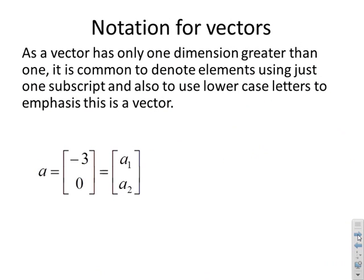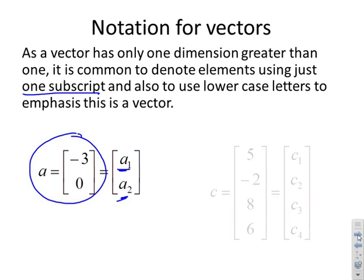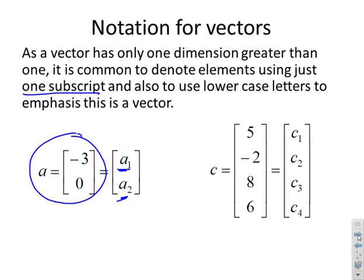Some notation for vectors: a vector has only one dimension greater than one, and therefore it's common to denote elements using just one subscript rather than two, because one of the subscripts is superfluous. For example, A is given by a column matrix with elements denoted just as A₁ and A₂. Similarly, C is a column vector where only one subscript is used to denote the elements.